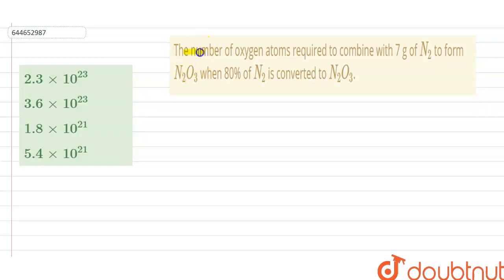Hello, our question is: the number of oxygen atoms required to combine with 7 gram of N2 to form N2O3 when 80% of N2 is converted to N2O3.